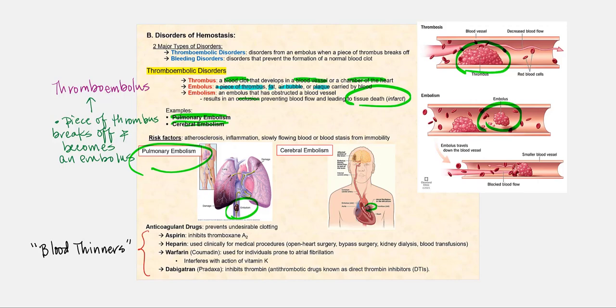From the common carotid artery, we have the internal carotid artery, one of the major arteries that delivers blood to our brain. And once it reaches the brain, it potentially can then get stuck in one of the smaller cerebral arteries. We now have a cerebral embolism, commonly known as a stroke.